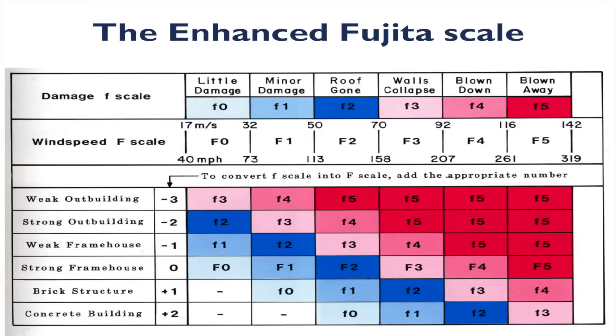This figure shows you the enhanced Fujita scale. I want you to be aware that we have a scale where we measure tornado severity according to the wind damage caused by these particular phenomena. It used to be just the wind alone, called the Fujita scale. But the enhanced Fujita scale also takes into consideration the amount of damage and the types of buildings that have been damaged.